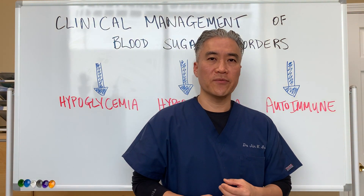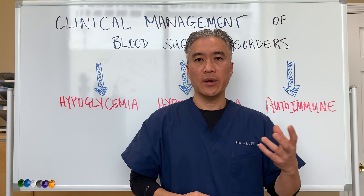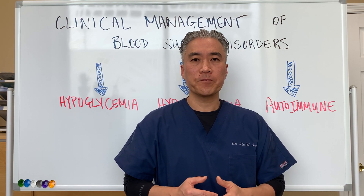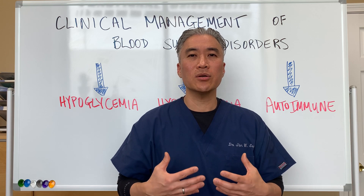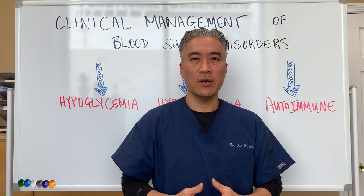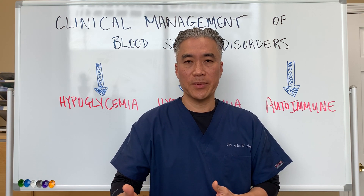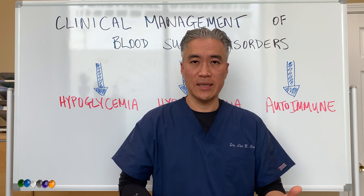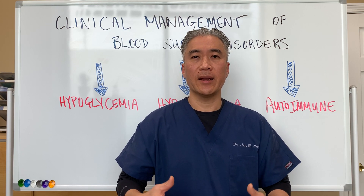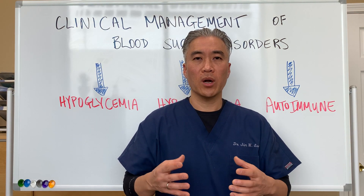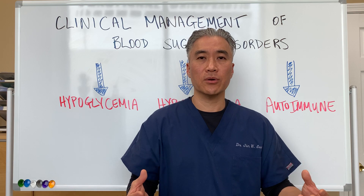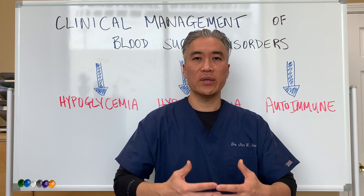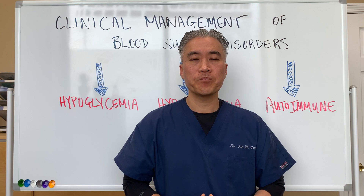Over the next three or four videos we're going to go over specifically what our clinical goals are for people who have hypoglycemia, hyperglycemia or diabetes, and autoimmune disease. What is our clinical goal and how do we know when these patients are getting better?